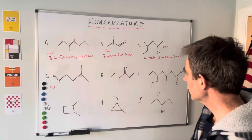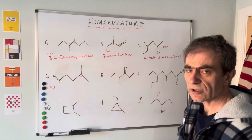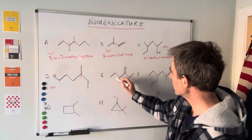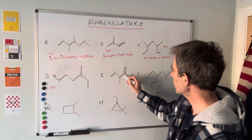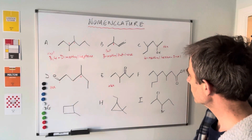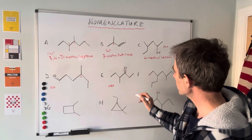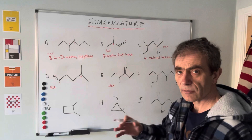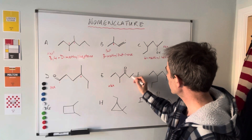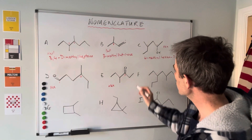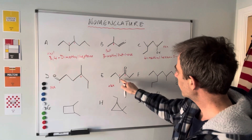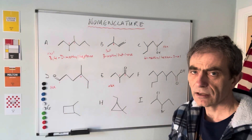The next one is a ketone, so the suffix is -one. The longest continuous chain goes right down the middle: one, two, three, four, five, six — it's 'hex'. The functional group determines the carbon numbers; counting this way one, two, three versus one, two, three — three wins. So the functional group is on carbon three, and the methyl group is on carbon four. This would be called 4-methylhexan-3-one.